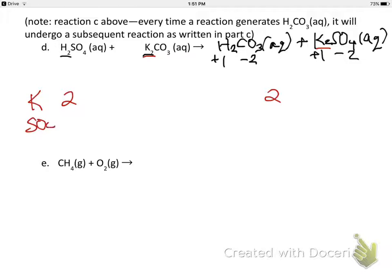And then I'm going to look at the sulfate group. There's one of them on the left and also one of them on the right. And then I'm going to look at the carbonate group. There's one of them here and one of them here. And that just leaves hydrogen for the last step. Two of them on the left, two of them on the right. So that works out.